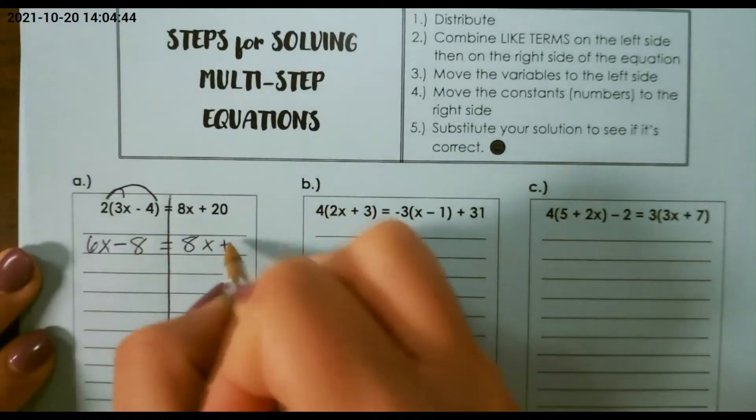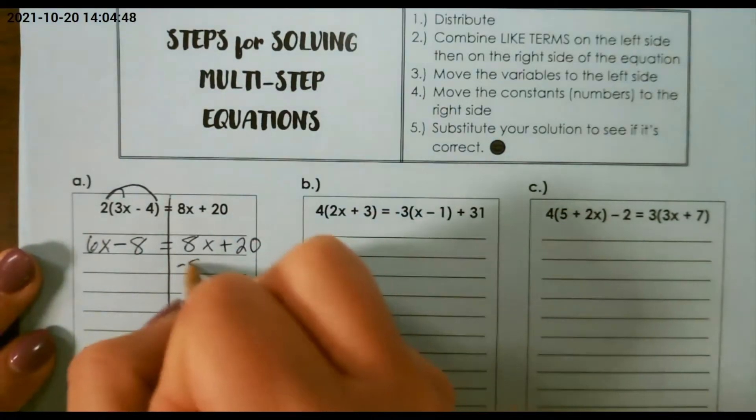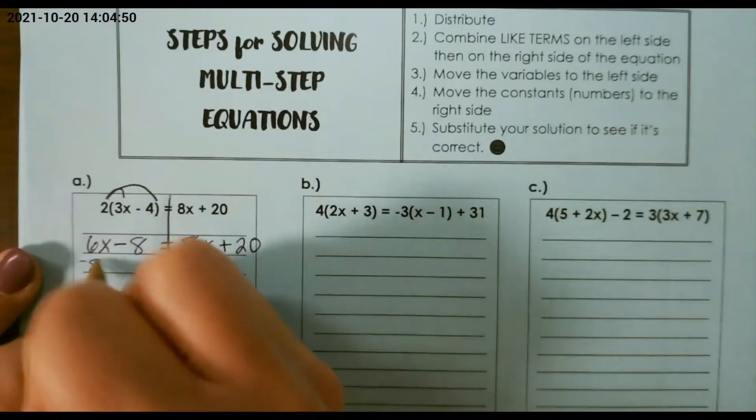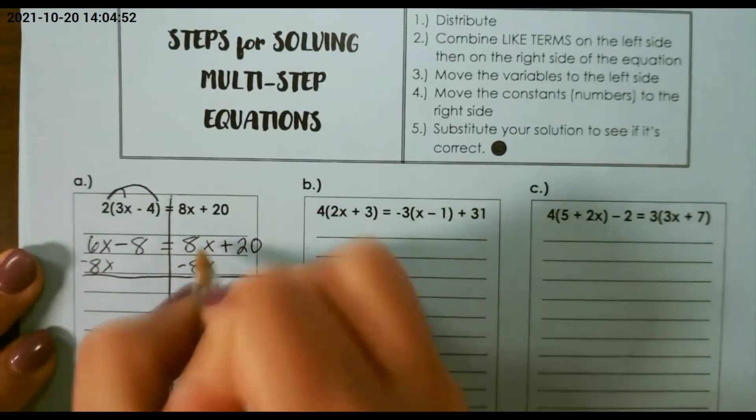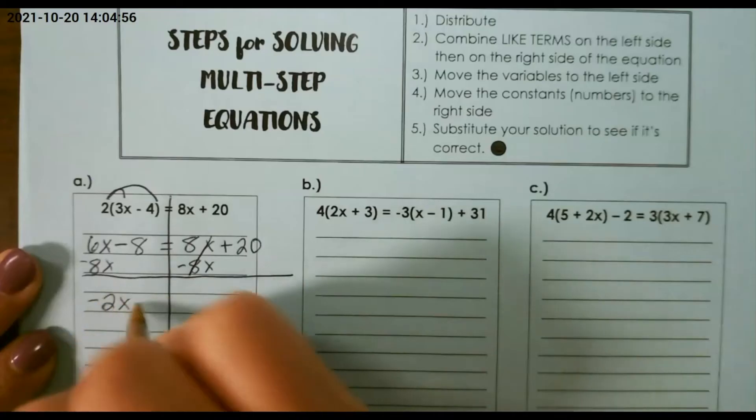Nothing on the right hand side needed to be distributed. So then, I want to move my variable to the left hand side, so 6x minus 8x is negative 2x.